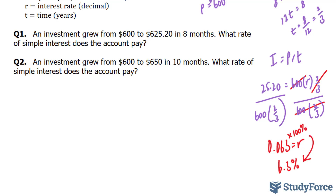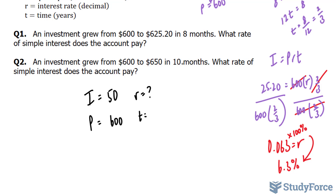Let's move on to question 2. Question 2 tells us that an investment grew from $600 to $650 in 10 months. What rate of interest does the account pay? Our i is $50 — I subtracted the starting amount from what was earned. My principal is $600, r is what I'm looking for, and t is 10 months.